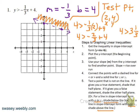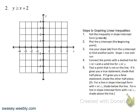Note: the less-than-shade-below, greater-than-shade-above shortcut only works in slope-intercept form. For this next example, we already have it in slope-intercept. The slope is one over one and the y-intercept is two. Plot a point at two, then go up one to the right one.